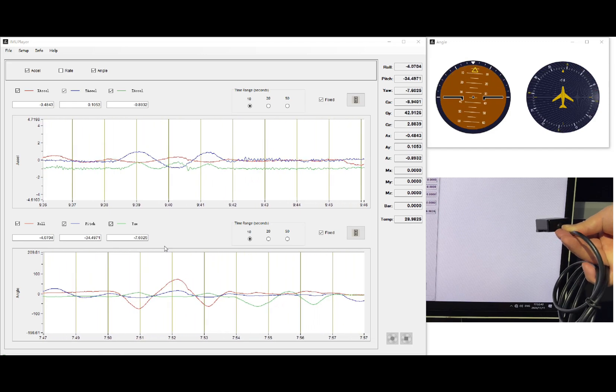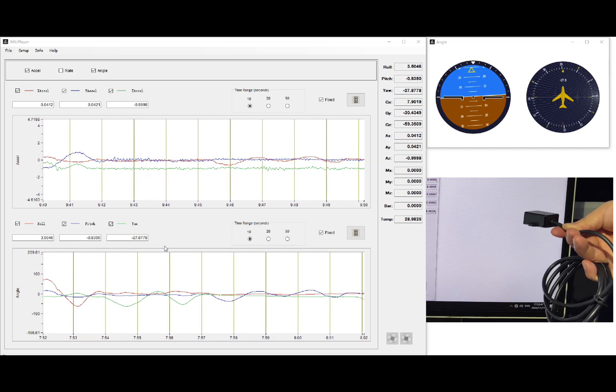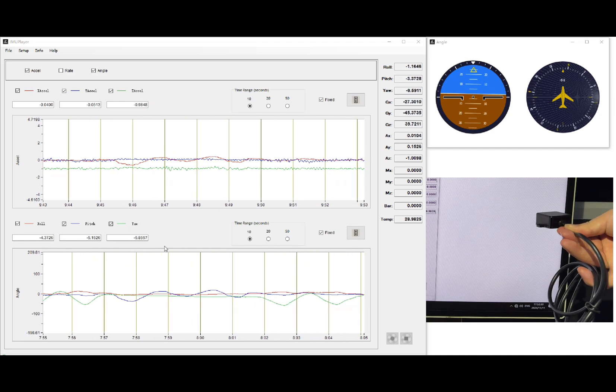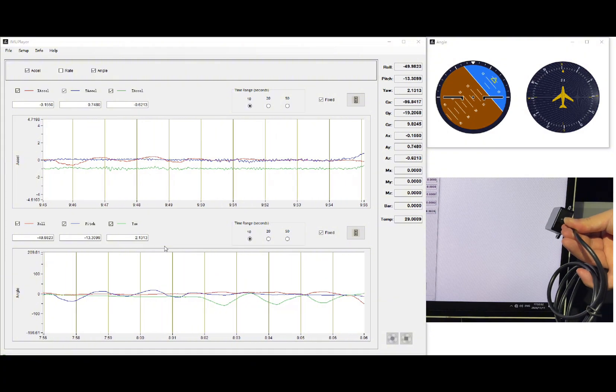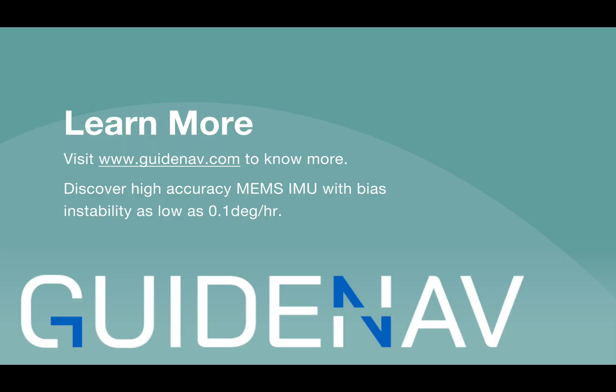At the same time, the Guide 670 IMU also processes the angular velocity to obtain real-time values for pitch, roll, and yaw, and displays them in the dashboard in the upper right corner. Thank you very much.